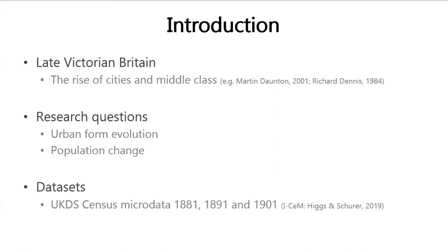To answer these questions, we make use of the digitized microdata from the census records from 1881 to 1901, provided by the UKDS under a special user license. The census records information about individuals' names, age, household structures, occupations, etc.